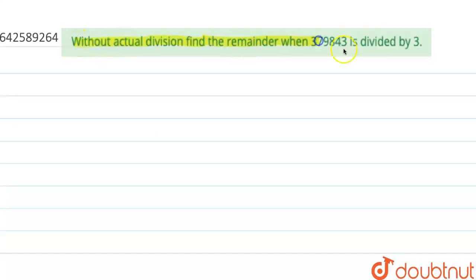Without actual division, find the remainder when 379843 is divided by 3. The divisibility criteria for 3 is that the sum of the digits of the given number, 379843, should be divisible by 3.